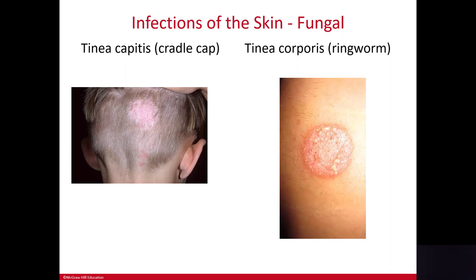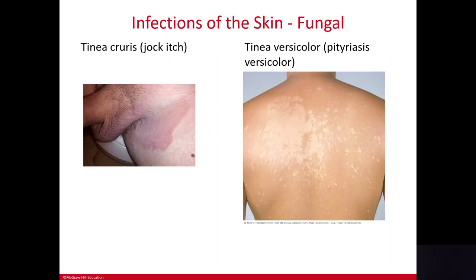Tinea capitis is commonly called cradle cap. Tinea corporis is commonly called ringworm — there are no worms involved; it's a fungal infection that grows in a circular pattern and can be found anywhere on the body. Tinea cruris is commonly called jock itch. Tinea versicolor, also called pityriasis versicolor, interferes with normal pigmentation of the skin — usually on the trunk, shoulders, and neck — causing patchy discoloration as you can see on the back in this picture.